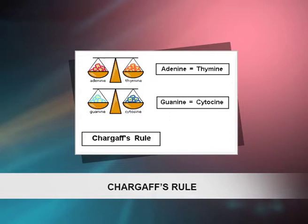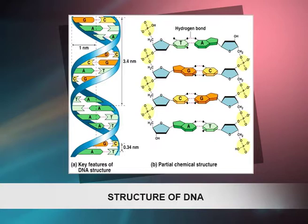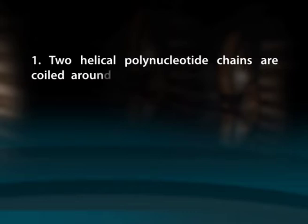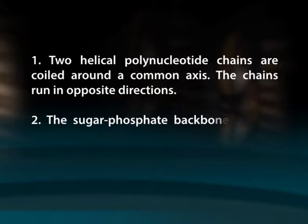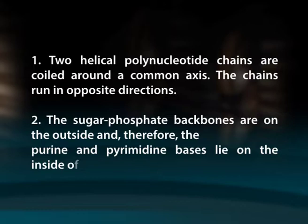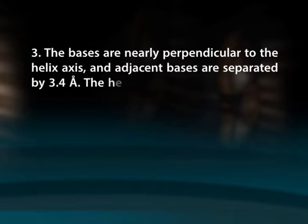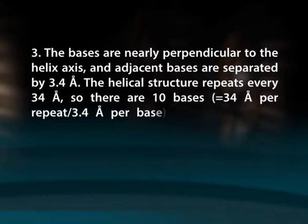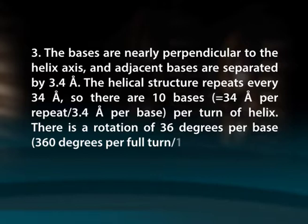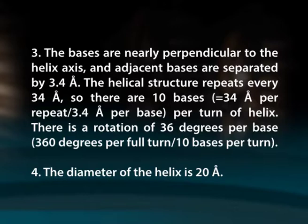The features of the Watson-Crick model of DNA deduced from diffraction patterns are: First, two helical polynucleotide chains are coiled around a common axis and run in opposite directions. Second, the sugar-phosphate backbones are on the outside, and the purine and pyrimidine bases lie on the inside of the helix. Third, the bases are nearly perpendicular to the helix axis and adjacent bases are separated by 3.4 Å; the helical structure repeats every 34 Å, so there are 10 bases per repeat (3.4 Å per base). There is a rotation of 36° per base, 360° per full turn, or 10 bases per turn. Fourth, the diameter of the helix is 20 Å.